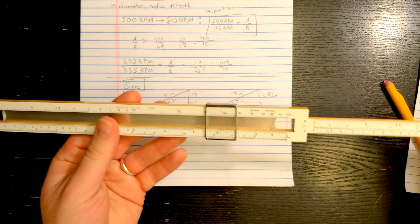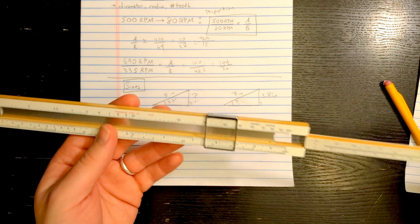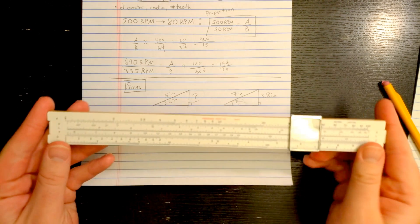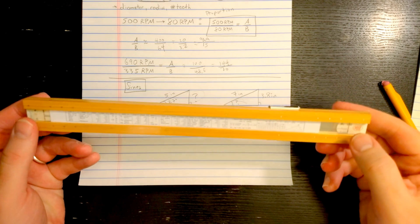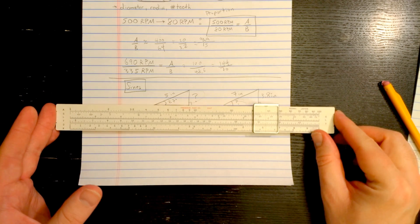Now on this slide rule, the scale for doing that is on the back, it's called S for sine. The easiest way to use it is by flipping it over, although you can use it slightly differently by using those rear hairlines.